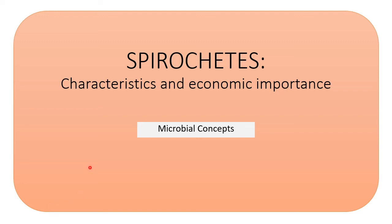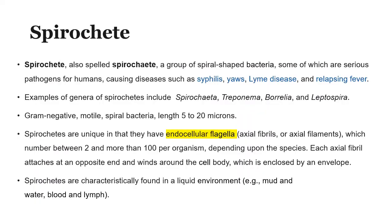Hello students and welcome back to Microbial Concepts. Today we are going to discuss about Spirochetes. We are going to discuss some characteristics and economic importance of Spirochetes. Spirochetes are a group of spiral-shaped bacteria, not to be confused with Spirillum and Vibrio — there is a slight difference that I will show you later.